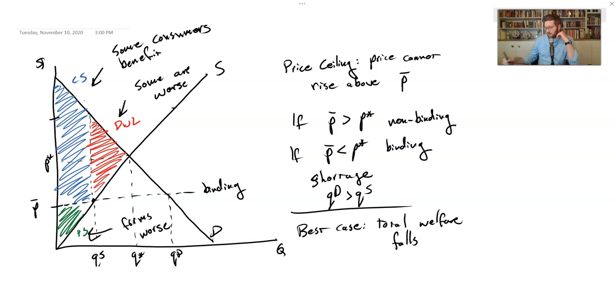The upshot is that this is the consumer surplus if the people who most value the good get it. But it could also be that anybody in this area is able to get the good. In the worst case scenario, this group of people with the lowest willingness to pay might be able to get the product, and their consumer surplus would be that. All that blue stuff would sort of disappear.